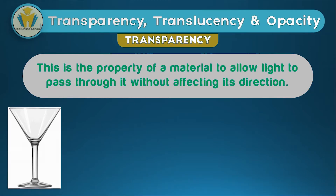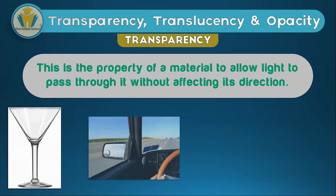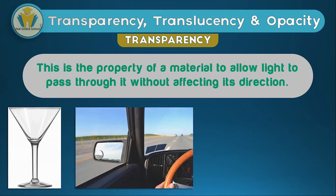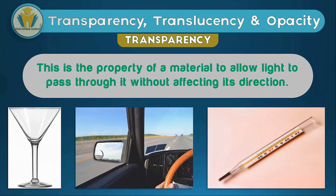This is a very important principle. Think about it — if objects were not transparent, such as the windows in a car, the driver couldn't see anything happening outside. So transparency is actually something very important even in our daily lives. You can also see this in a clinical thermometer, because the object used — which is usually glass — means someone taking a temperature reading can easily see how the mercury has moved in the capillary.